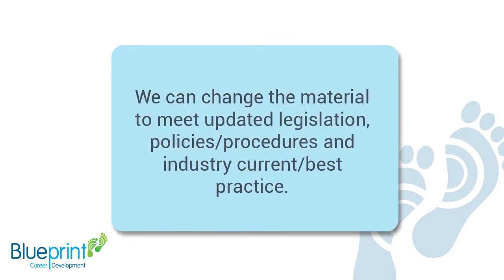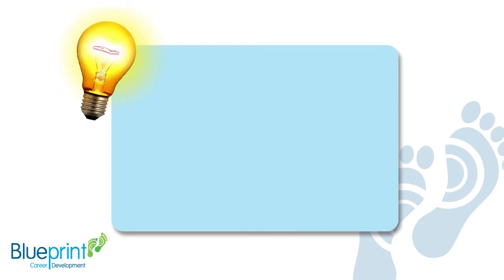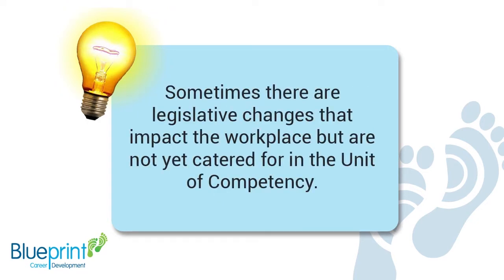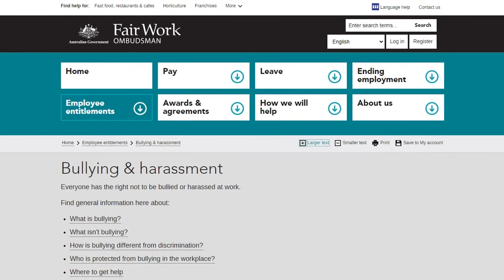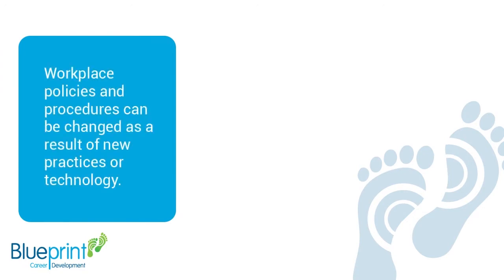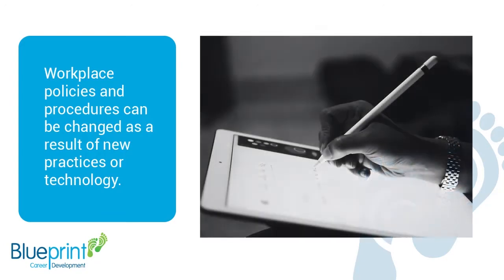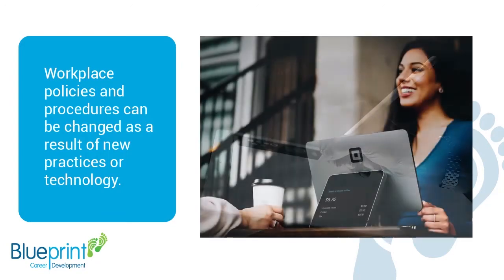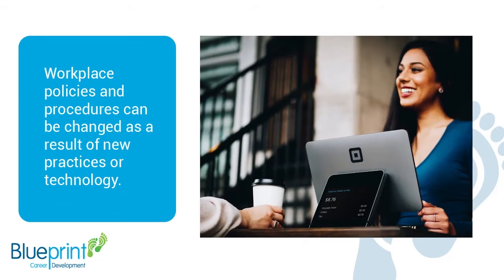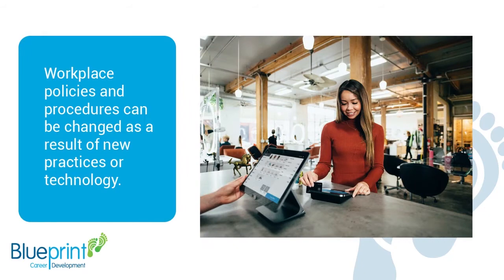We can change the material to meet updated legislation, policies or procedures and industry current or best practice. Sometimes there are legislative changes that impact the workplace but are not yet catered for in the unit of competency — for example, new workplace bullying and harassment definitions. Workplace policies and procedures can be changed as a result of new practices or technology; for example, in restaurants, iPads are often used to take customer orders or to book in before being seated. Sometimes it is simply because industry practice has moved far quicker than the training package, which is why training packages are reviewed regularly.